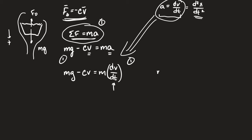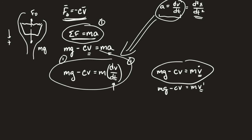By the way, this could also be written as v with a dot on top — that's dot notation. In engineering you'll see dot notation almost all the time; you won't see prime notation because prime means something else in engineering and physics. So dot notation is more common than prime notation. Don't be thrown off — no teacher will explain that to you when you get to college.